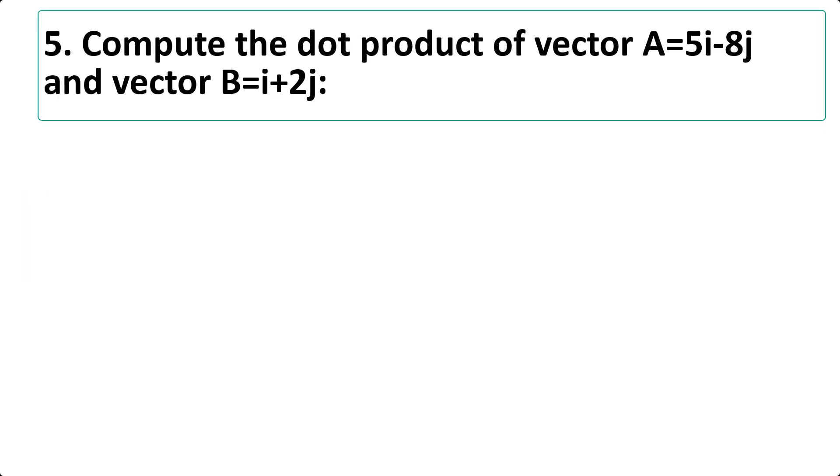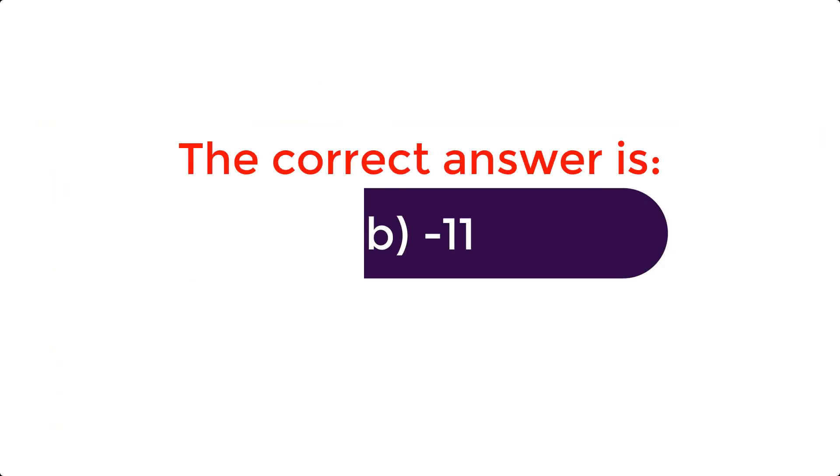Compute the dot product of vector a equals 5i + 8j and vector b equals i plus 2j: A. 10 B. Minus 11 C. 12 D. 9. The correct answer is B. Minus 11. Question 4.